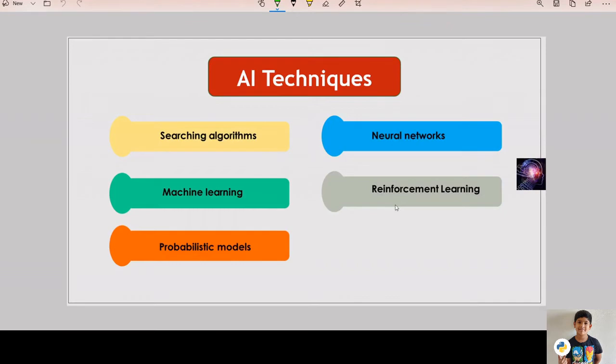Next one is reinforcement learning. Reinforcement learning is learning what to do and how to map situations to actions which results in maximum reward. A learner is not told what actions to take but instead must discover which action will yield the maximum reward.